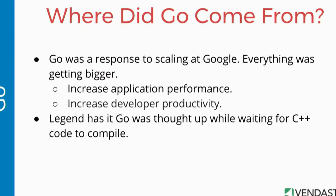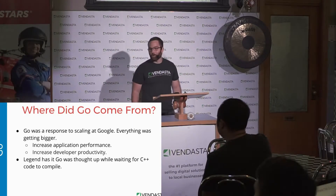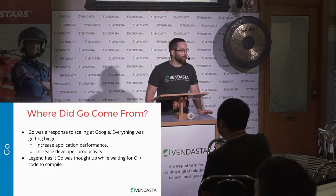So where did Go come from? Go was a response to scaling at Google. Basically, everything at Google was getting bigger — they had tons of servers, tons of code, and tons of developers working on that shared code. They needed a way to increase developer productivity and increase application performance. Legend actually has it that Go was thought up while waiting for a 45-minute C++ build.